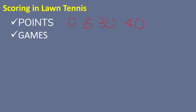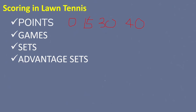We also have games: each game is worth four points, and a player wins if he or she scores four points with at least a two-point edge. We also have sets: a set comprises six games, and the player or team who reaches six games first with at least a two-game advantage wins the set. For advantage sets, a player or team can only win a set with a two-game lead; if the game score is six to six, advantage set rules are utilized.